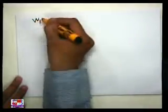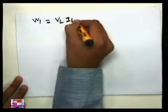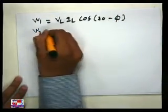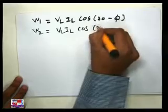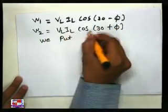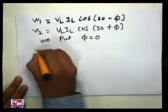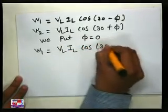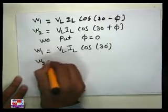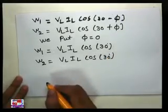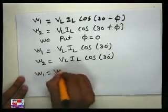We put this value into the 2 readings: W1 = VL into IL into cos(30° − φ), and W2 = VL into IL into cos(30° + φ). Putting φ = 0: W1 = VL into IL into cos(30°), and at the same time W2 = VL into IL into cos(30°). So you can see that W1 = W2.